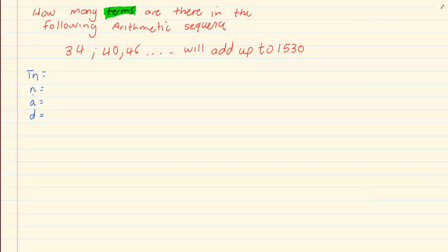Now what you would notice is they're asking about the terms. Usually when you see the word terms you go into T_n, n, a, and d. Now if we're going into T_n, n, a, and d, a is easy: 34, d is 6, but you do not have T_n. Be careful: what they are saying is that it will add up to...